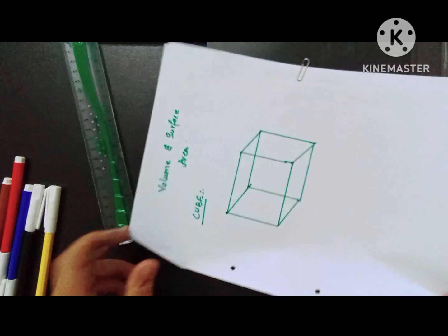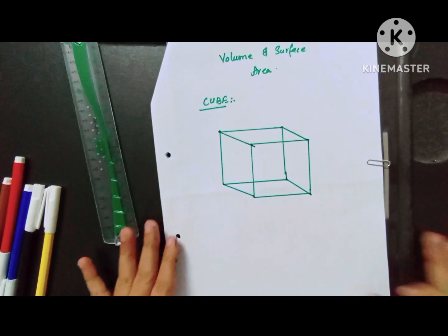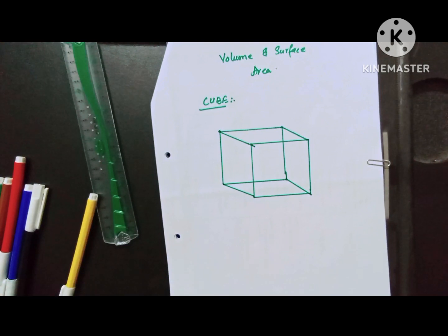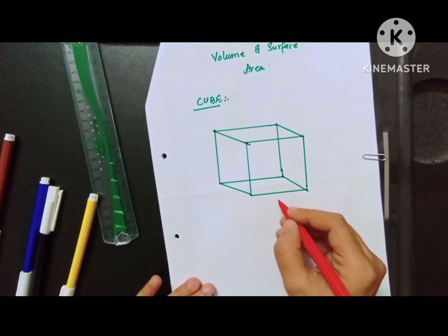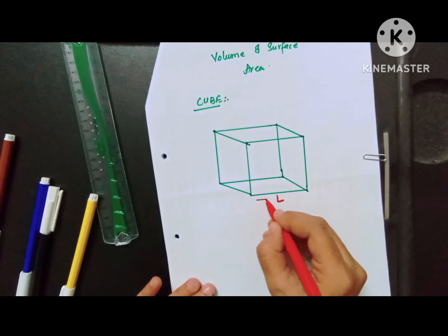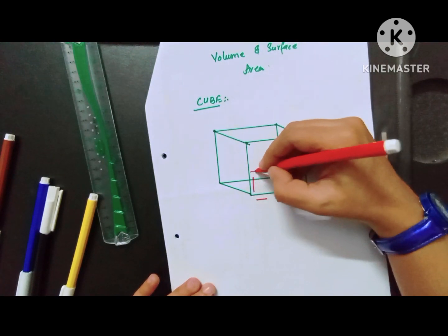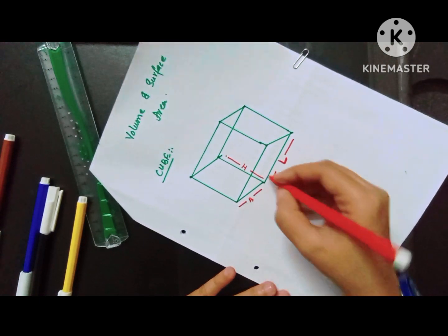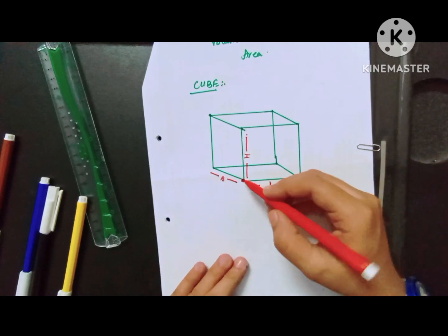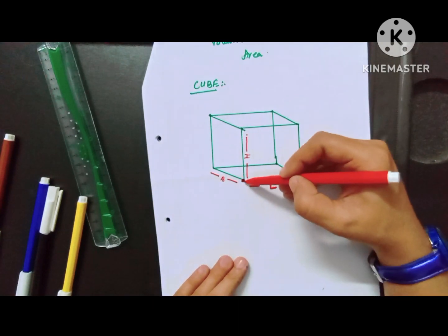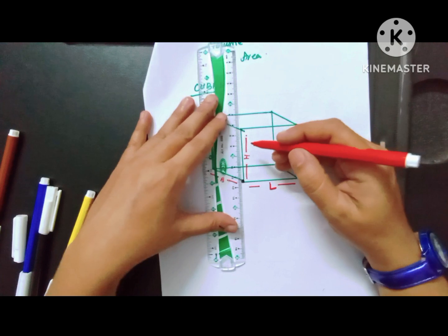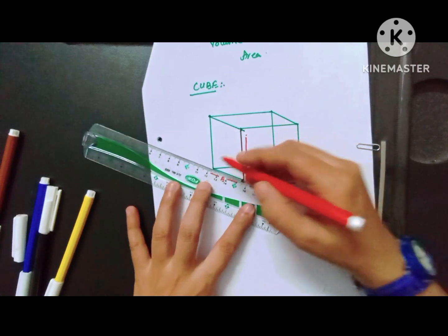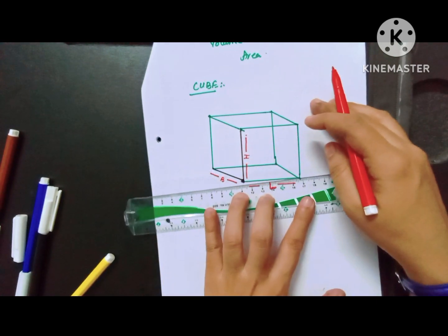Take a 3D figure — in a cube, all the dimensions are similar. If you take any one point from that figure, from that one point you can see three dimensions.